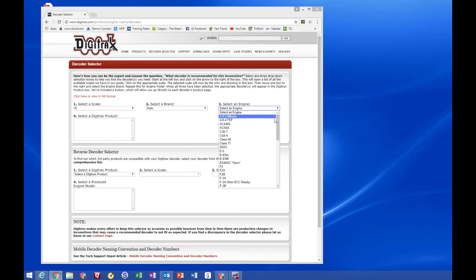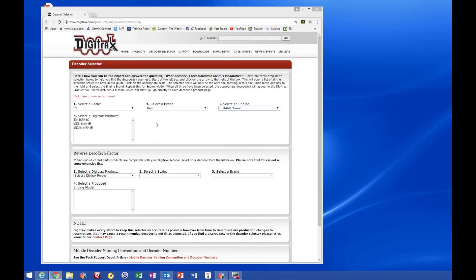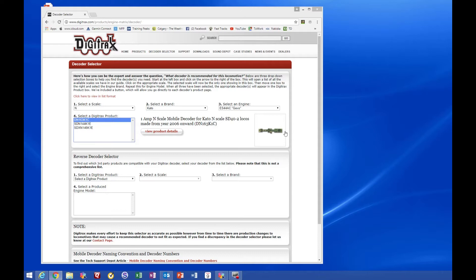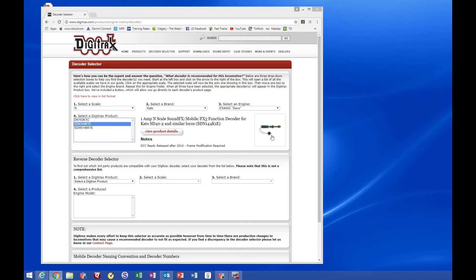I select an engine and it's an ES44AC Gevo. It comes back and says here's three products that can be used. This first one is a mobile decoder, the 144K1E. It says it's a sound FX, DCC ready release after 2010, frame modification required. But I don't do any frame modification. So I'll show you how that works.